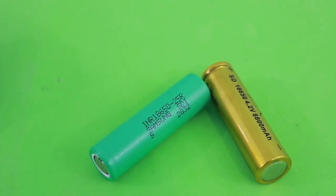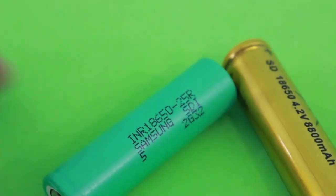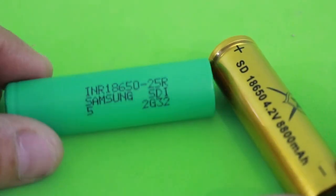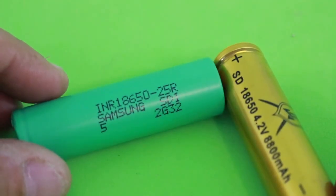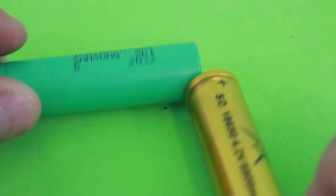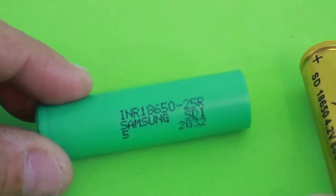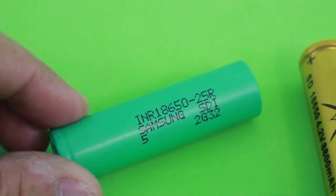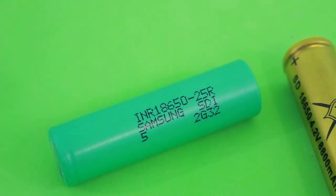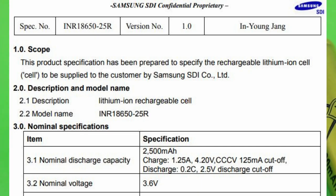For illustration purposes I will use these two batteries. They are 18650 lithium-ion batteries and the first one is a Samsung. If we see the data sheet, this battery is rated at 2500 milliamps.